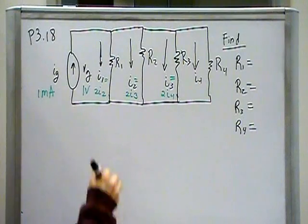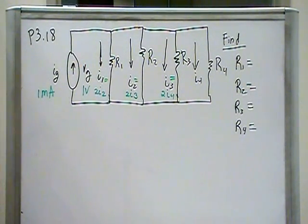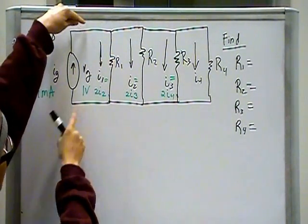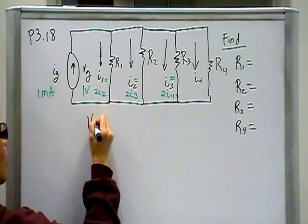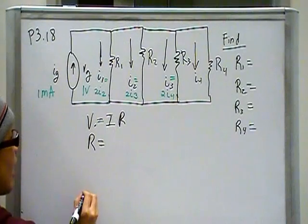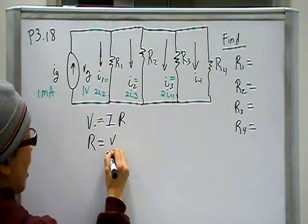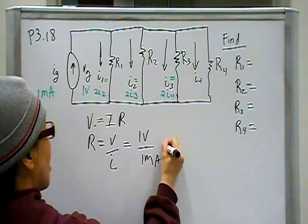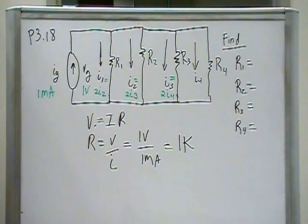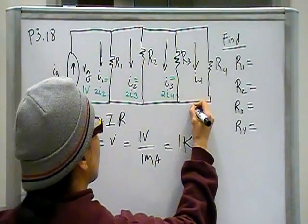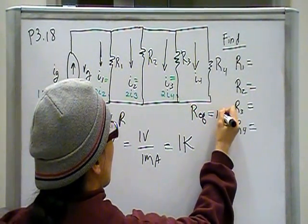We need to find Req. We need to find the equivalent resistance seen. If we were to take our DMM and put the probes right here, what is the equivalent resistance that we would see? Well, we can solve for that because we know that V is equal to IR. So therefore, our R, the resistance seen at the source, is going to be V over I. And that is 1 volt over 1 milliamp, and that is equal to 1 kiloohm. So now we know what resistance is seen by the source. We can continue to use the current division. I'm going to park that value here. Req is 1 kiloohm.